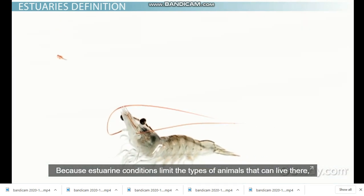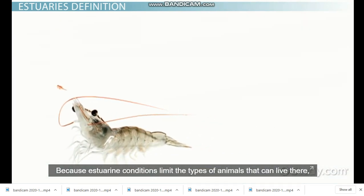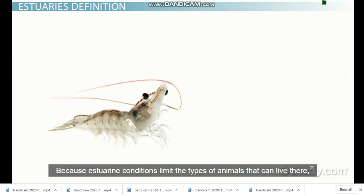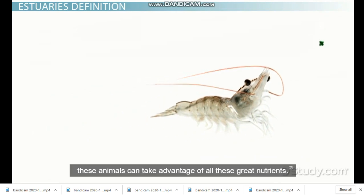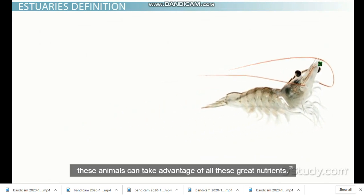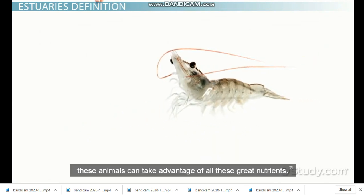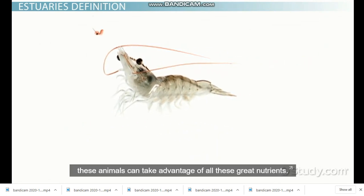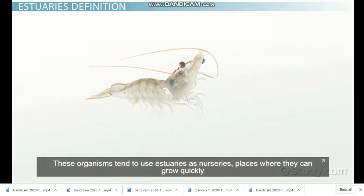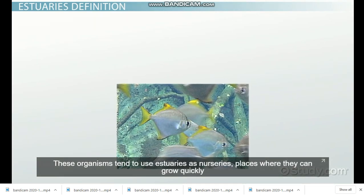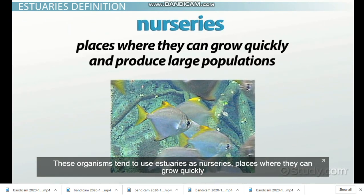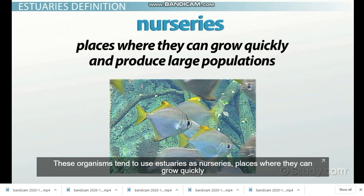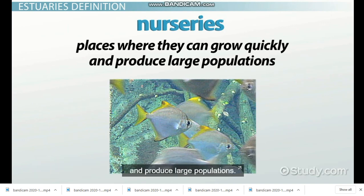Because estuarine conditions limit the types of animals that live there, these animals can take advantage of all these great nutrients. These organisms tend to use estuaries as nurseries — places where they grow quickly and produce large populations.